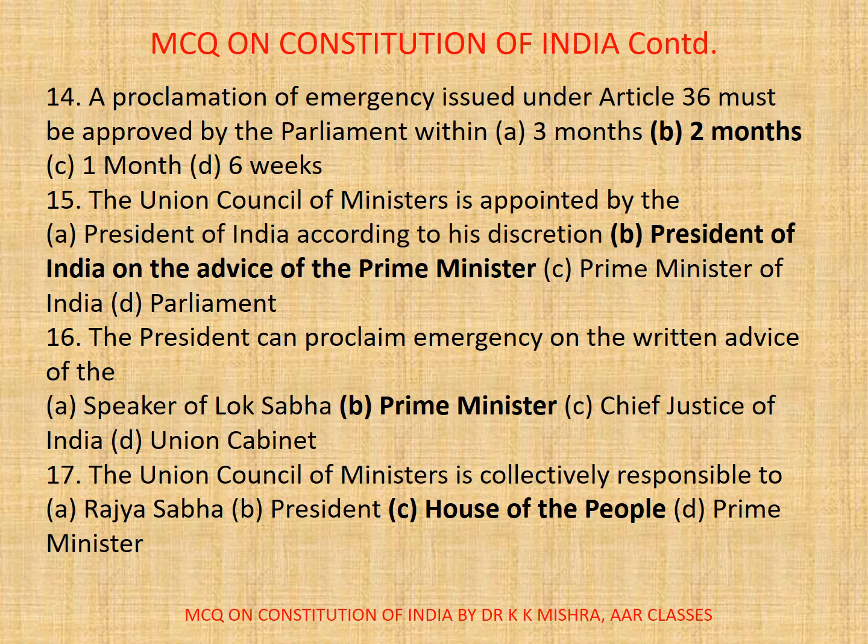Question number 14. A proclamation of emergency issued under Article 356 must be approved by Parliament within: a) 3 months, b) 2 months, c) 1 month, d) 6 weeks. Correct option is b) 2 months.